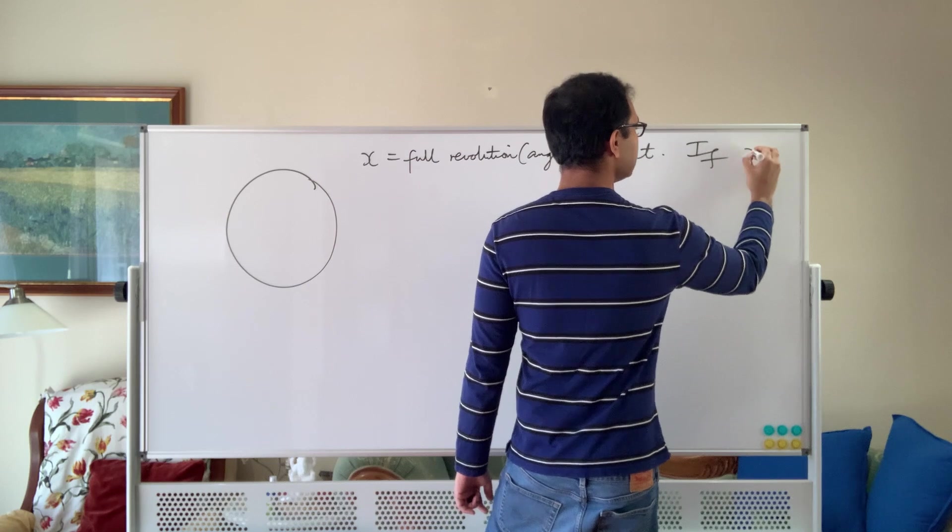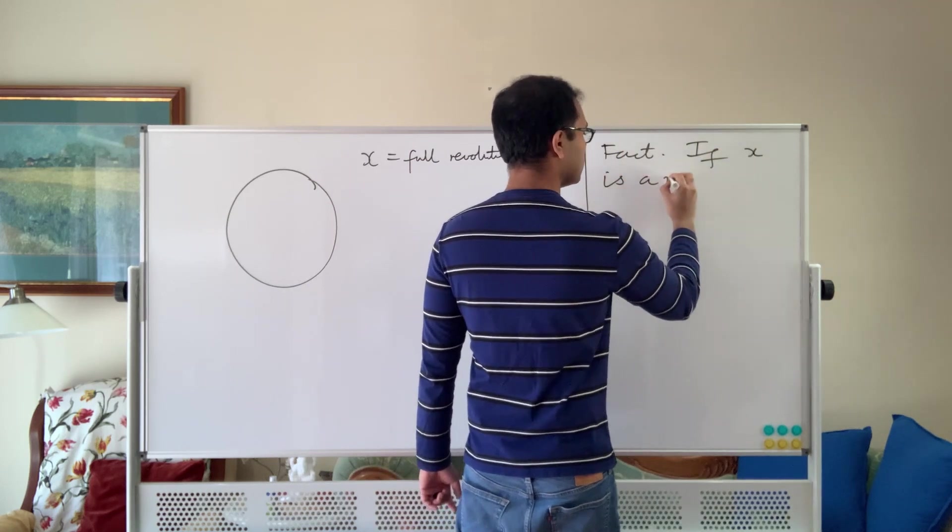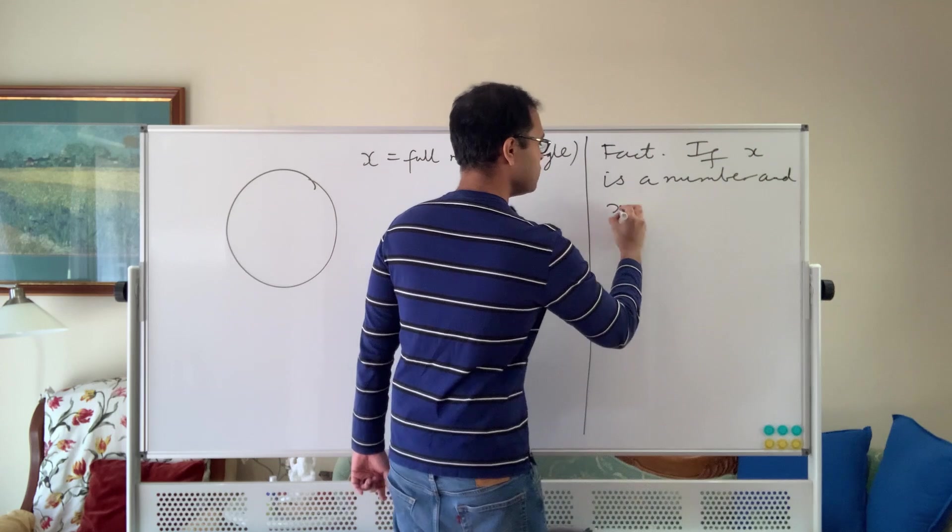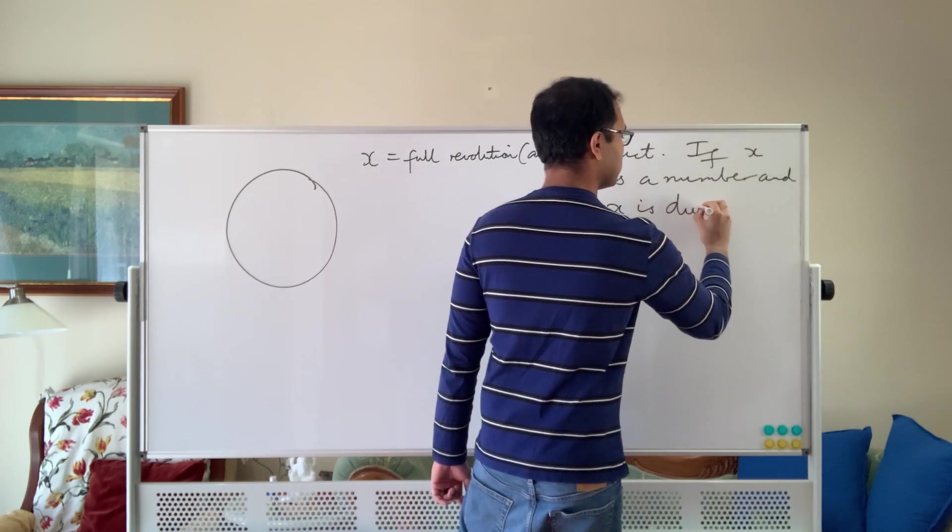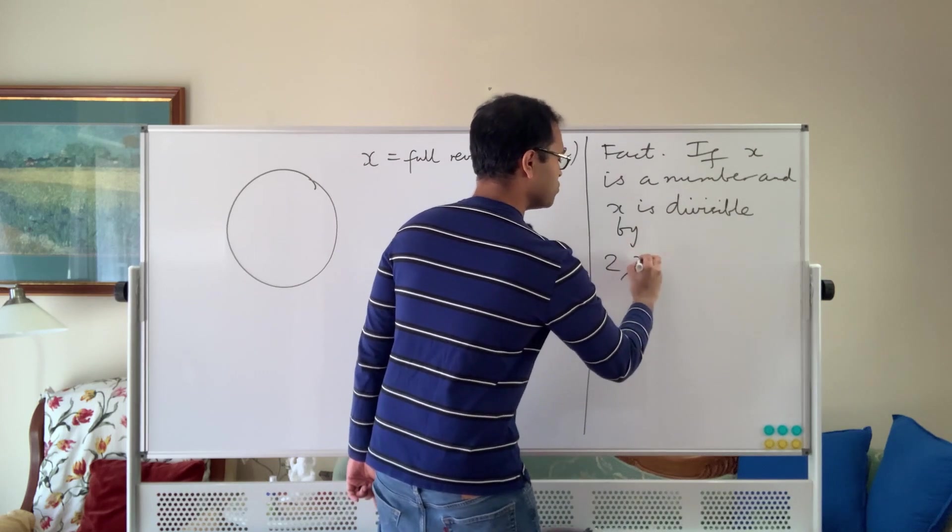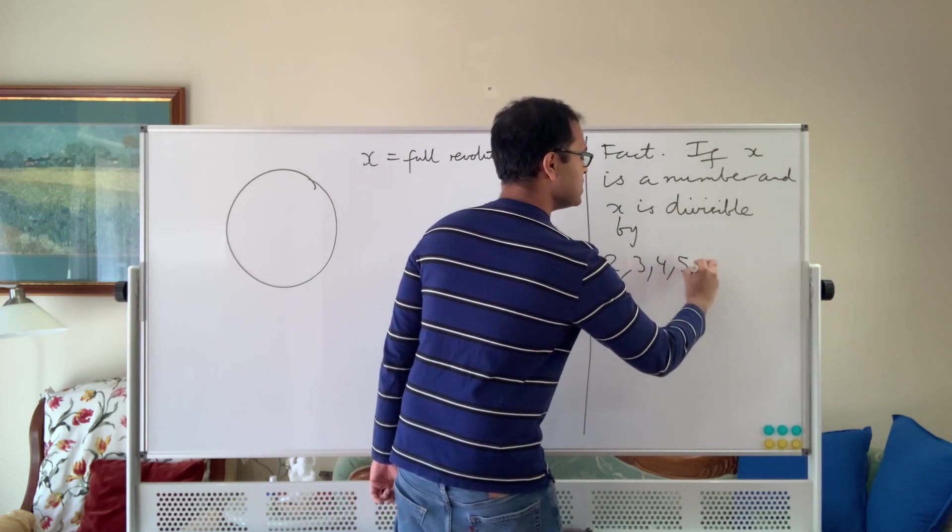If x is a number, and x is divisible by the following, x is divisible by 2, 3, 4, 5, 6.